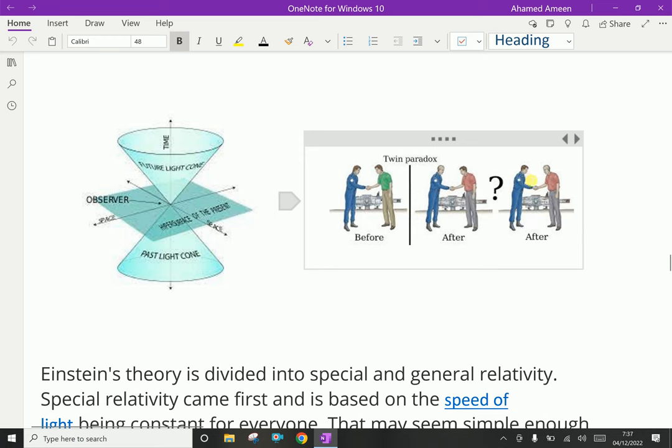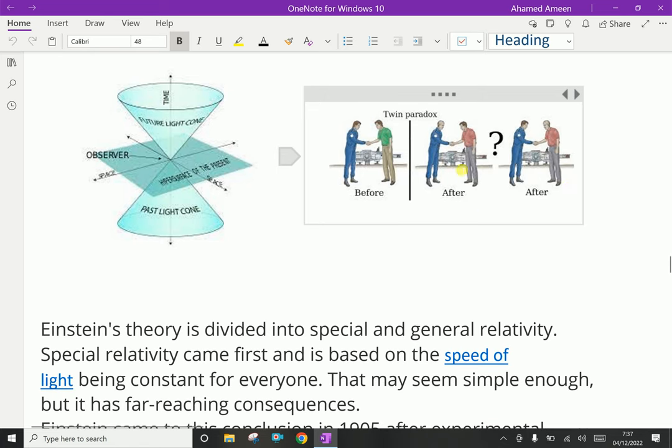A person who travels at very high speed, his age is somewhat stopped. His time is slowed down for him. But this person who is living on Earth, his time is normal. This is called twin paradox. Most people cannot believe this, but it's real.